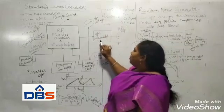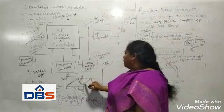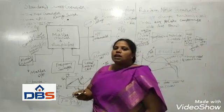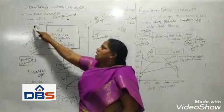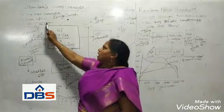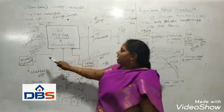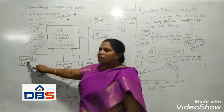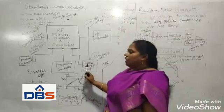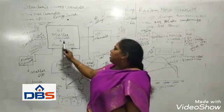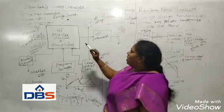Then it is connected to the output attenuator, smoothening the output, and we can get the sweep generator output. So this is about the standard sweep generator — it is a ramp generator that varies the linear output voltage and linear output current. We use it in the CRO to sweep the electron beam from left to right, and in TV receivers. The block diagram identifies the marker generator for frequency interval, the frequency sweeper for frequency variation, and the level control circuit to monitor the RF level — all mixing in the RF master oscillator to get the RF output.